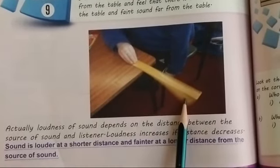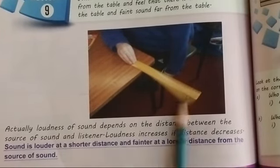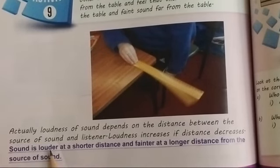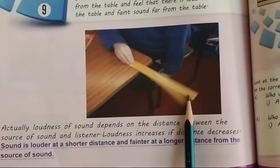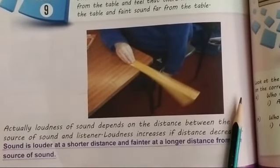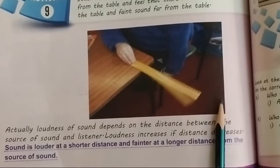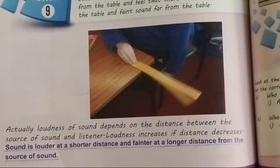Where the sound is being produced, if the distance is shorter, less distance, then the sound will be louder. Very loud. And if the sound is being produced, and your distance is longer, more, you are standing far, then the sound will be fainter. The sound will be less, not loud.